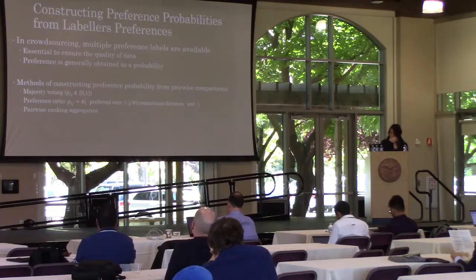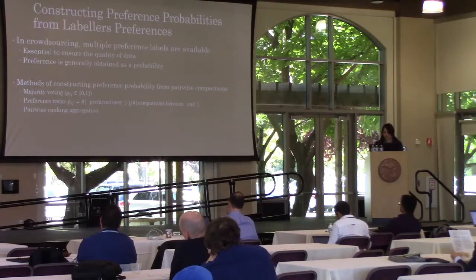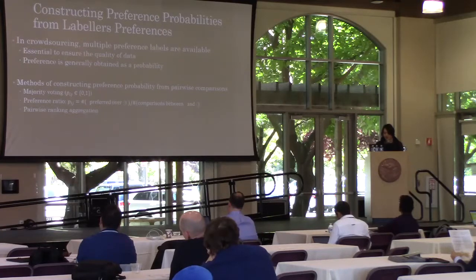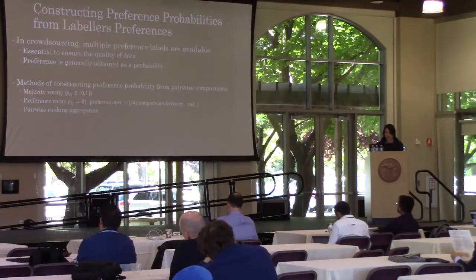In crowdsourcing, multiple preference labels from multiple labelers are often available. It is essential to ensure the quality of data. There are many aggregation methods for multiple preferences.